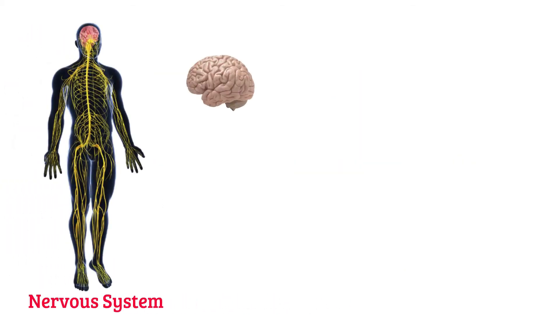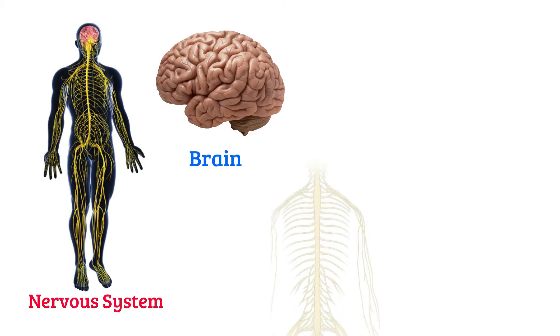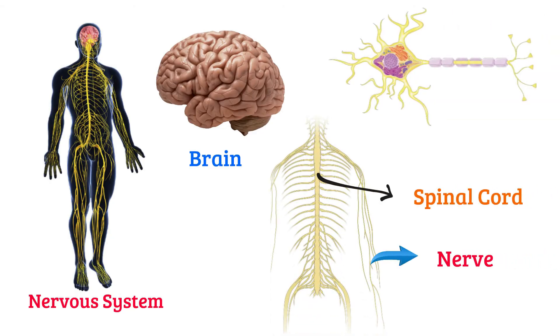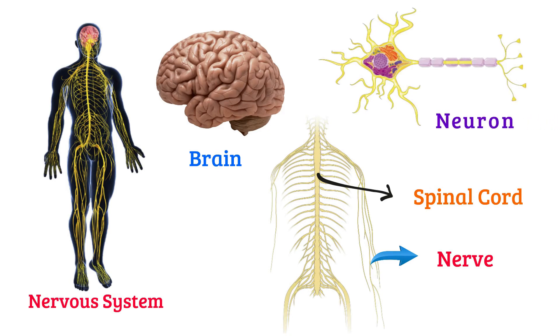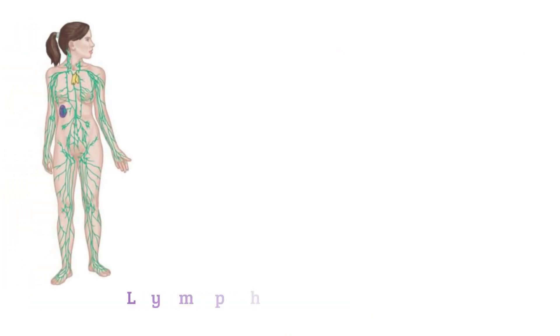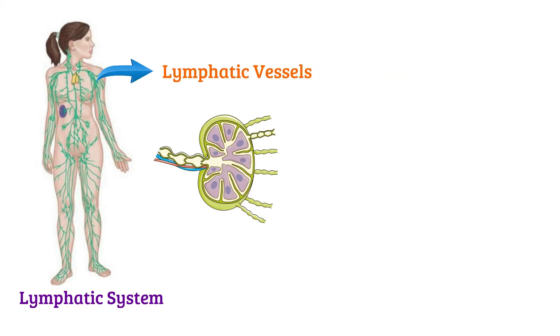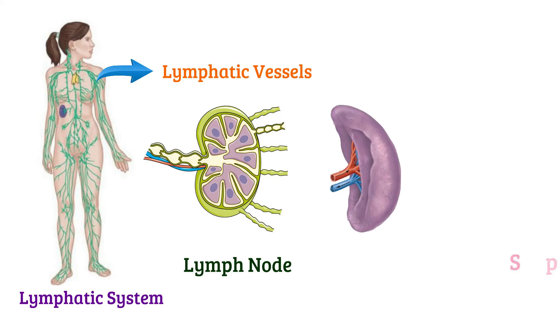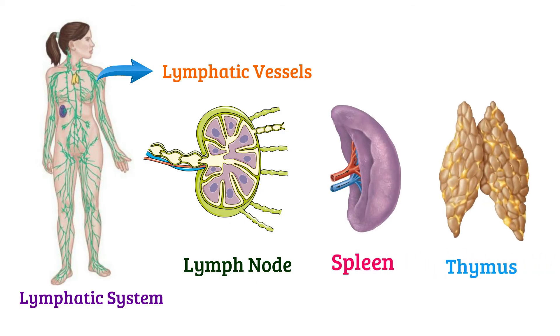Nervous system: brain, spinal cord, nerve, neuron. Lymphatic system: lymphatic vessels, lymph node, spleen, thymus.